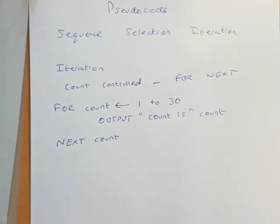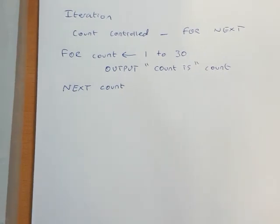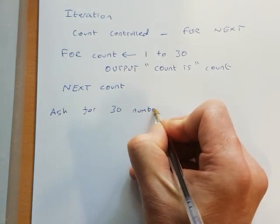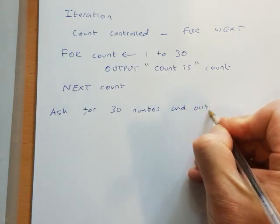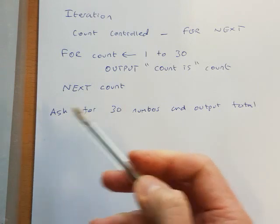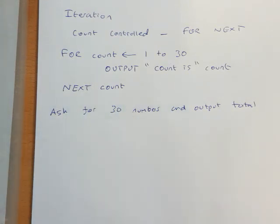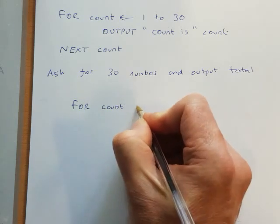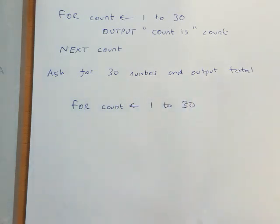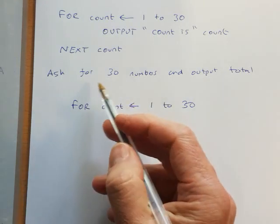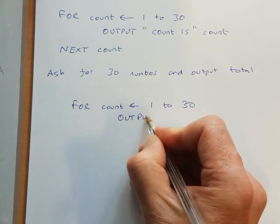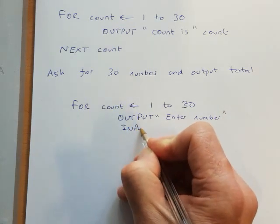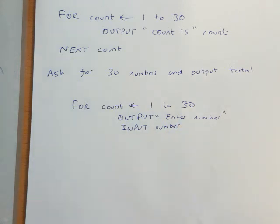So we could put that into a question. Let's say ask for 30 numbers and output total. This could be a small part of another question. So first thing we're going to do is we know how many times our loop is going to run, so we can say for count equals one to 30. So we need to ask for a number, so we'll put a message 'enter number', we'll then input that and we'll store it in the variable number.